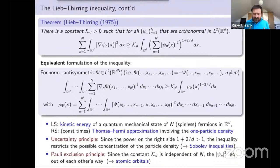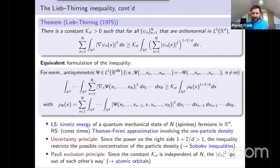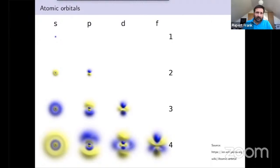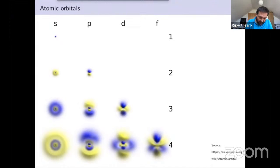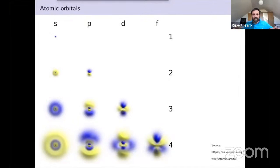The Pauli exclusion principle is often phrased as saying two particles cannot occupy the same quantum state. In the setting of kinetic energy bounds, you can interpret this as saying the particles have to go out of each other's way. If we drop the orthonormality — dropping the Pauli exclusion principle — we could take all the ψₙ's equal, meaning all particles sit on top of each other. Enforcing orthonormality forces the particles to spread out. These atomic orbitals from high school chemistry illustrate this: to enforce orthogonality, the supports of the functions become larger and larger, occupying new spaces.